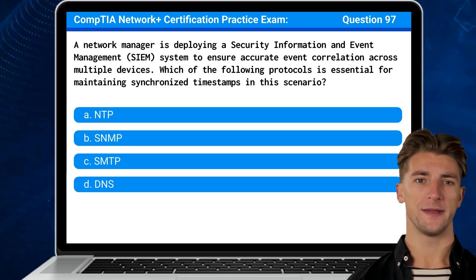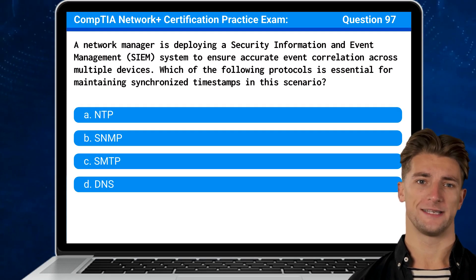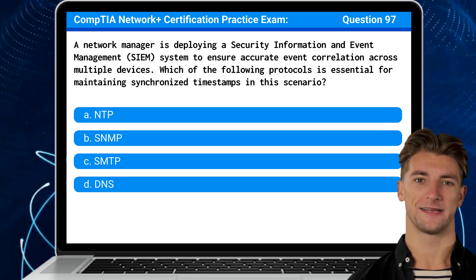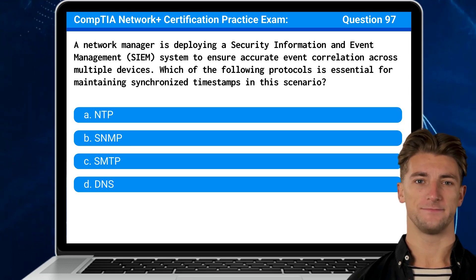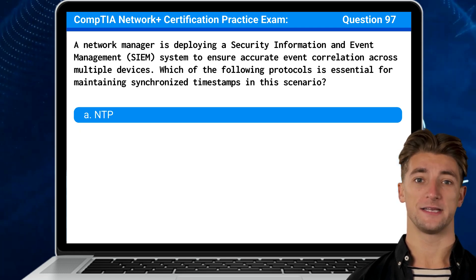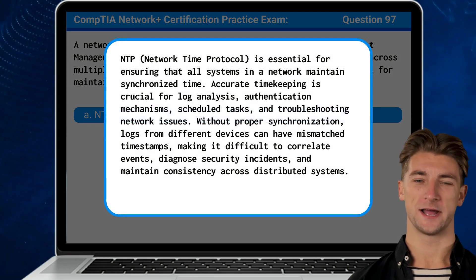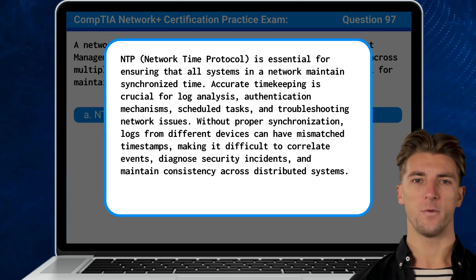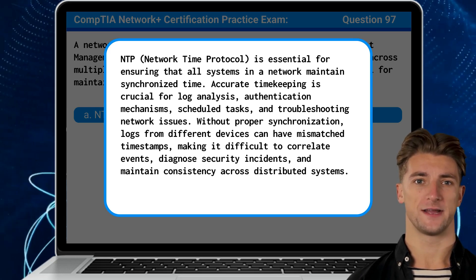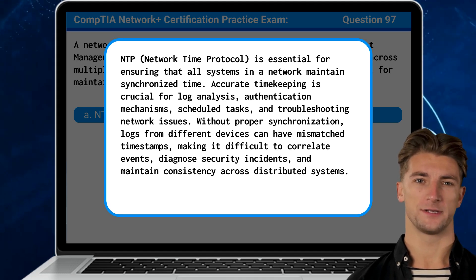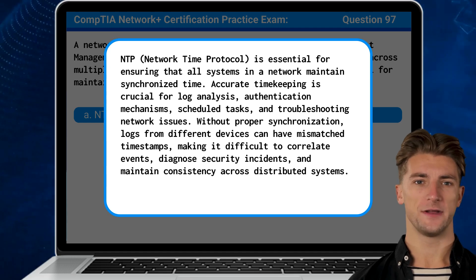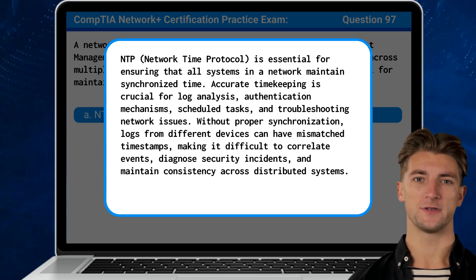Question 97. A network manager is deploying a security information and event management system to ensure accurate event correlation across multiple devices. Which of the following protocols is essential for maintaining synchronized timestamps in this scenario? The answer is A. NTP. NTP or Network Time Protocol is essential for ensuring that all systems in a network maintain synchronized time. Accurate timekeeping is crucial for log analysis, authentication mechanisms, scheduled tasks, and troubleshooting network issues. Without proper synchronization, logs from different devices can have mismatched timestamps, making it difficult to correlate events, diagnose security incidents, and maintain consistency across distributed systems.